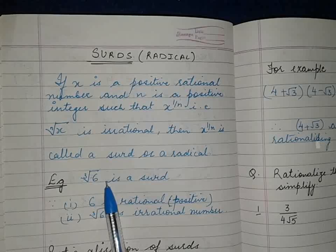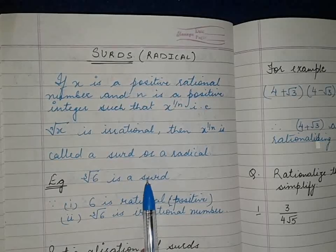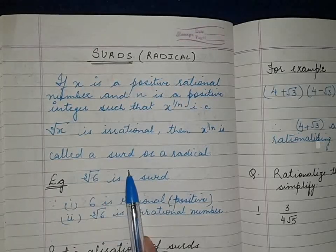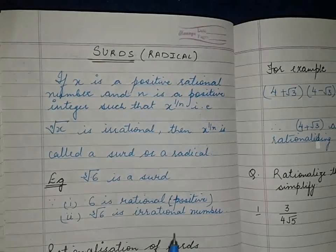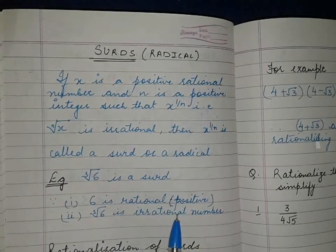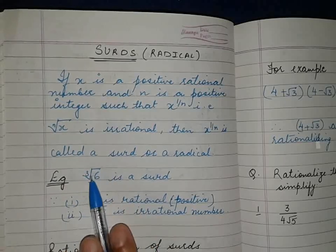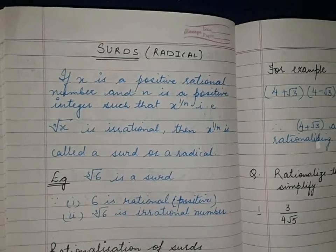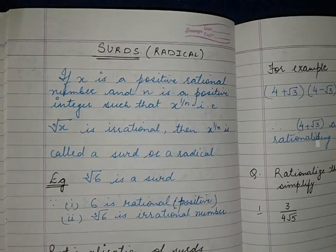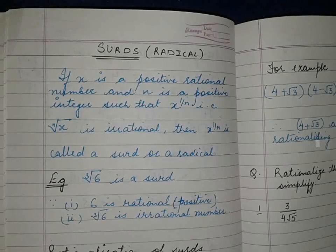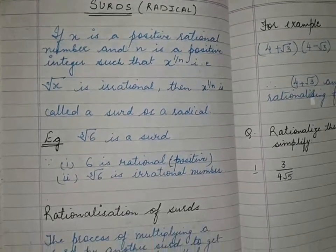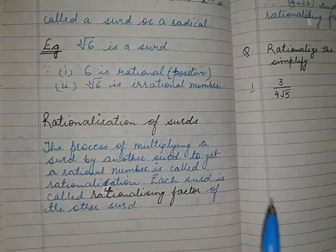For example, cube root of 6 is a surd because cube root of 6 will not come out to be any rational number. 6 is rational but cube root of 6 is irrational, so this is a surd or radical. Now we will learn about the method of rationalizing the surds.